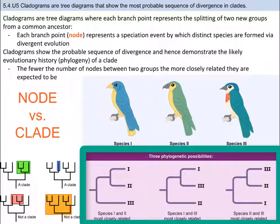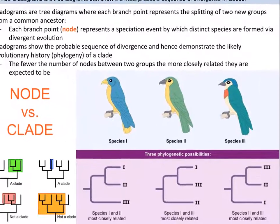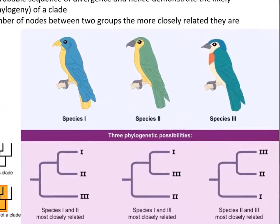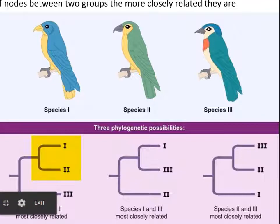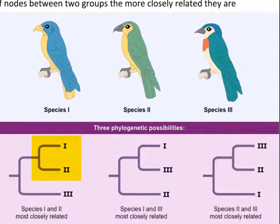In the picture, we have some forky-looking things — these are cladograms. A cladogram is a tree diagram where each branch represents a splitting of two groups from a common ancestor. There are some important key terms you need to know: node and clade. The point where two forks in the tree come together is a node, and it represents the point where two species had a common ancestor. A clade is all of the organisms that share a common ancestor, and is usually denoted by highlighting a section of the cladogram.